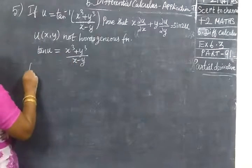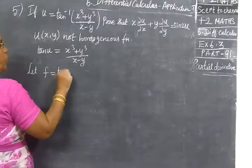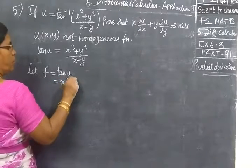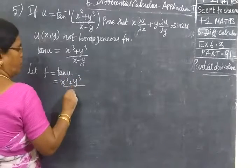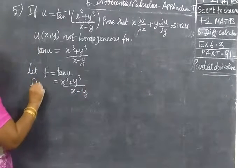Now let x equal to tan u, that is nothing but x cube plus y cube by x minus y.